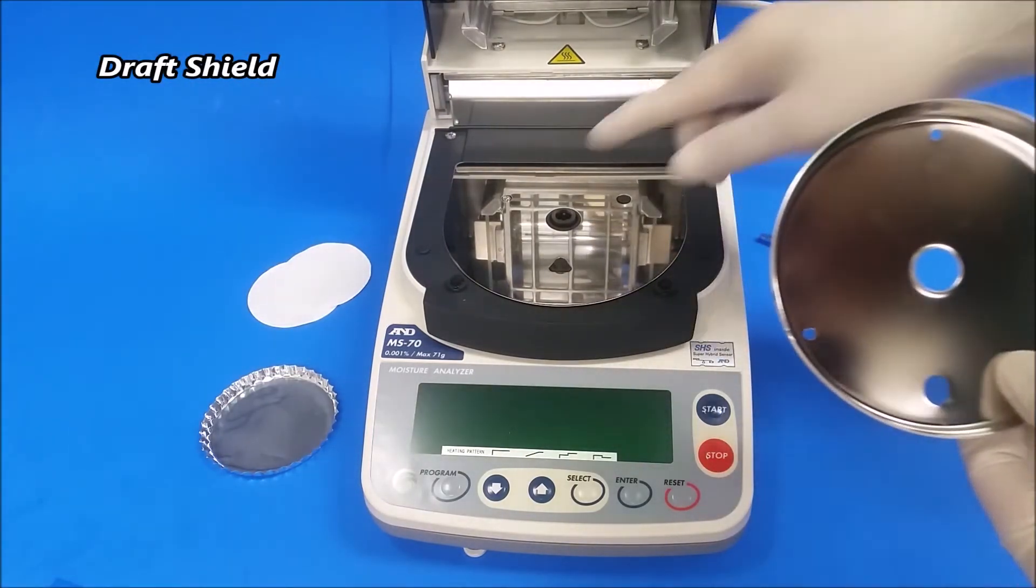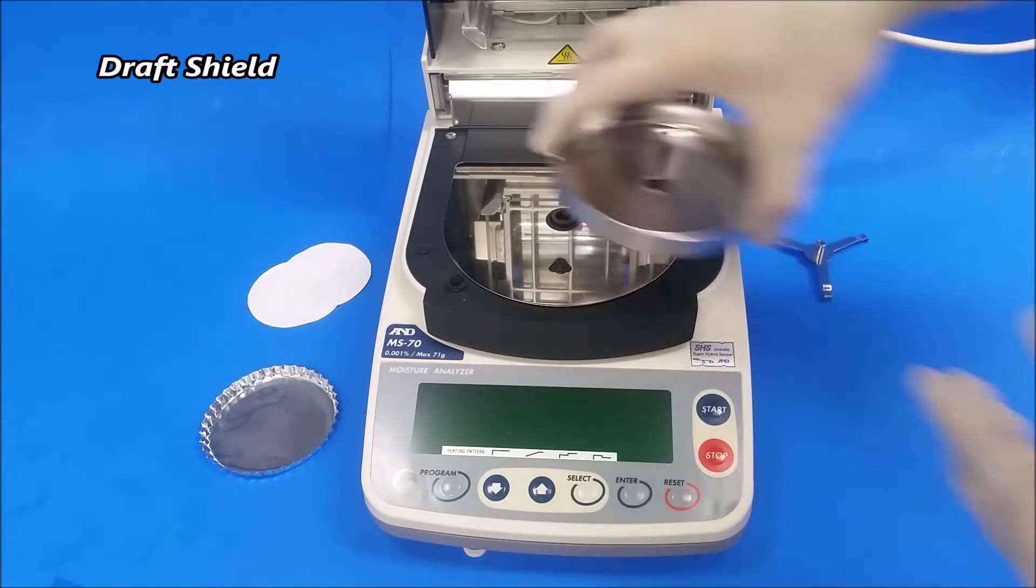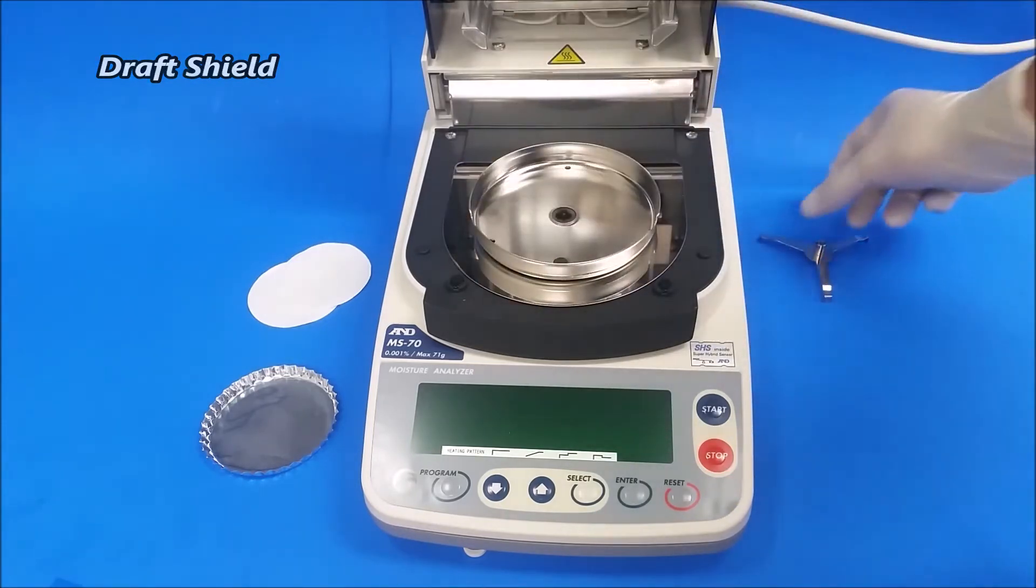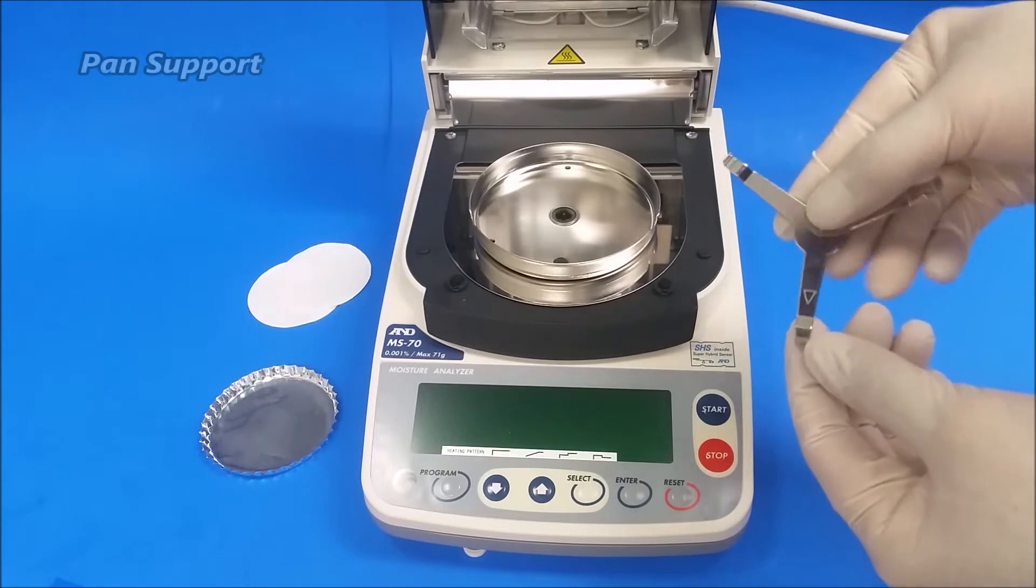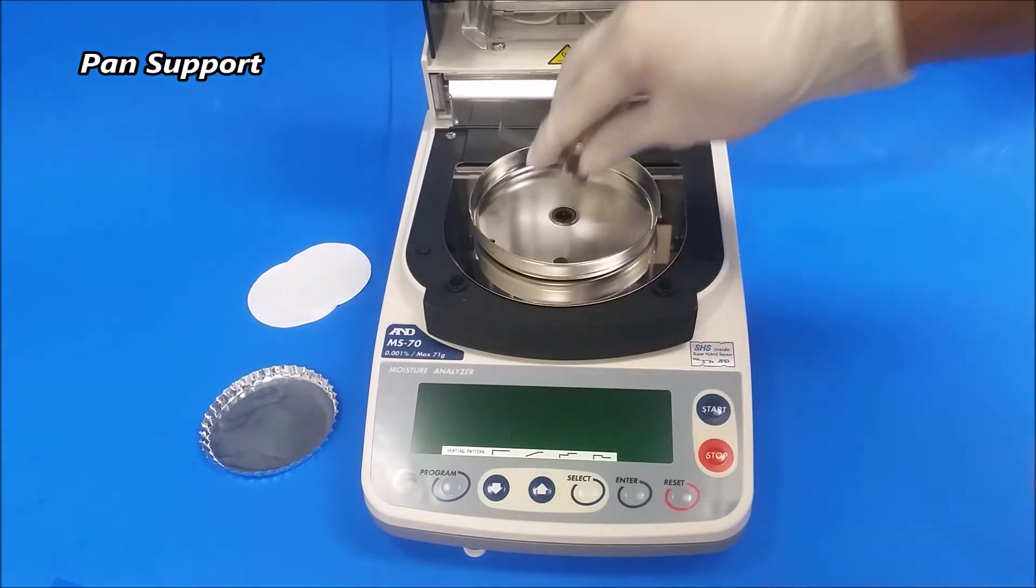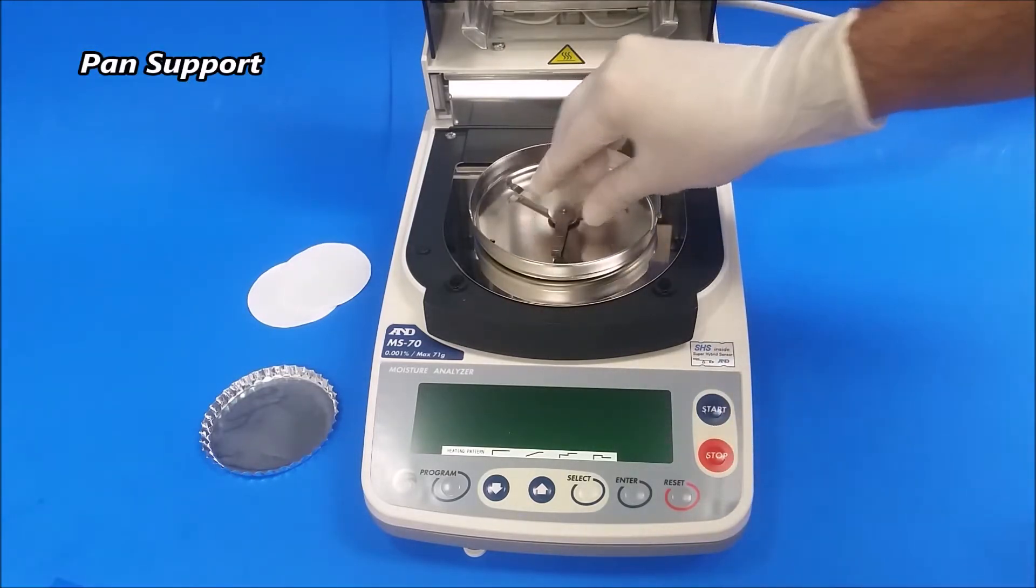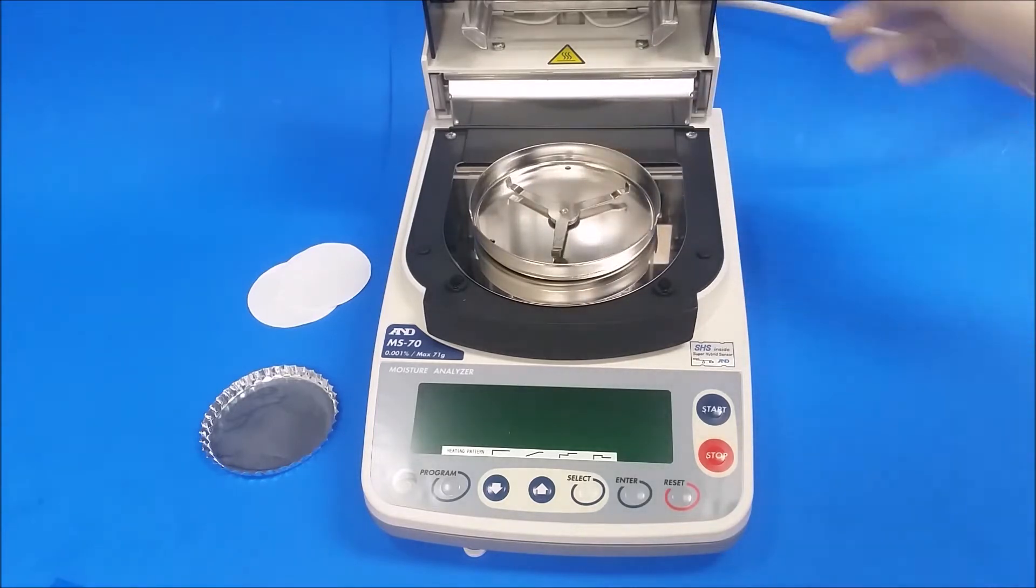Next piece will be the pan support. There's a little arrow that should be pointing towards you. Next will be to plug in your unit. On the side here there's an on and off switch.